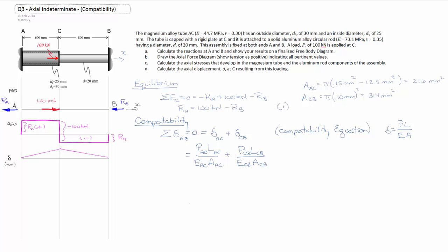We're going to draw in the data for material properties and geometric properties. The load PAC, we go to our axial force diagram, the force internal between A and C is equal to RA. The length LAC is 600 millimeters. The EAC, it's a magnesium alloy tube between A and C, so 44,700 megapascals. The area AAC is 216 millimeters squared.